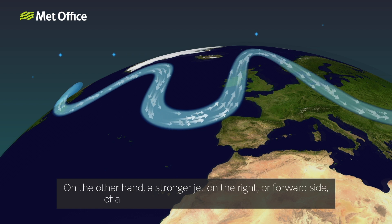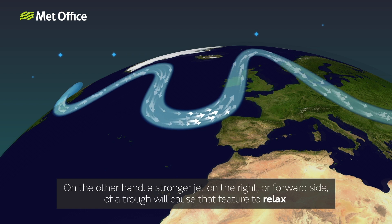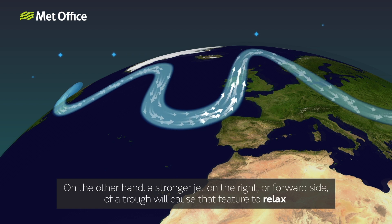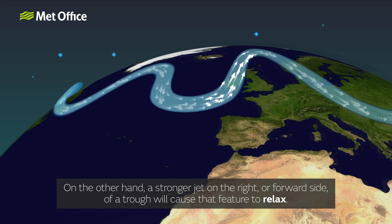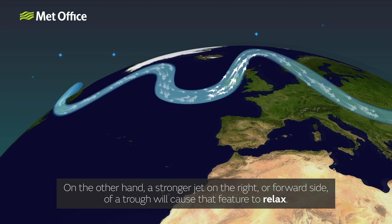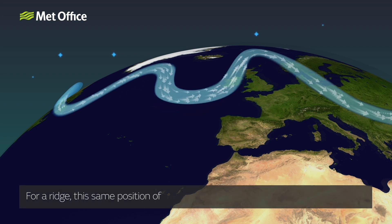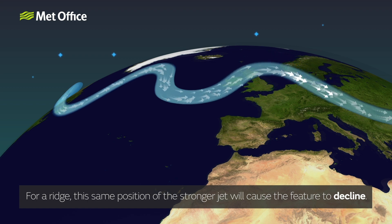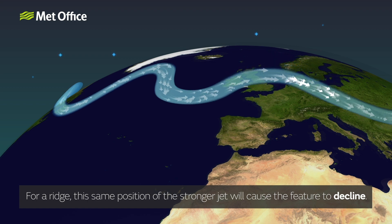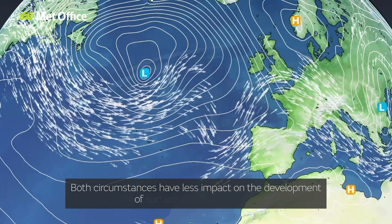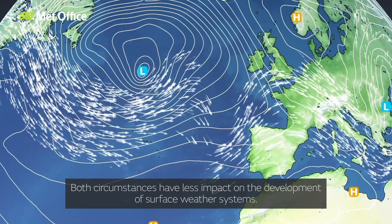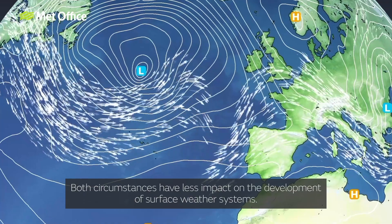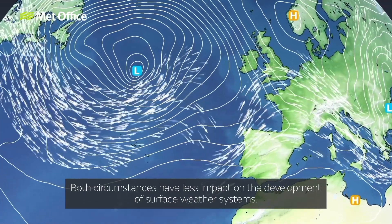On the other hand, a stronger jet on the right or forward side of a trough will cause that feature to relax. For a ridge, this same position of the stronger jet will cause that feature to decline. Both circumstances have less impact on the development of surface weather systems.